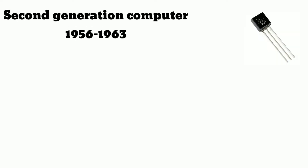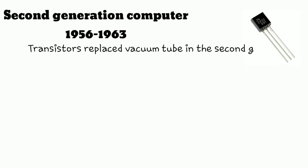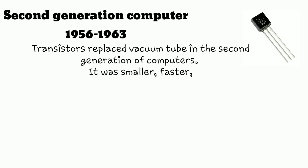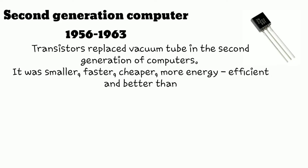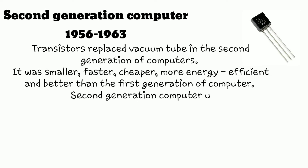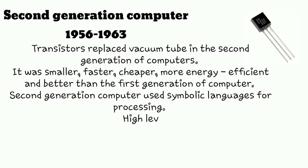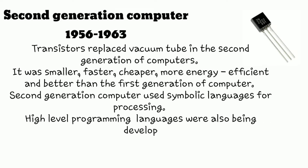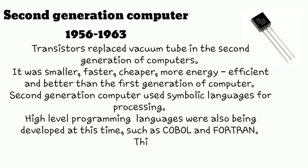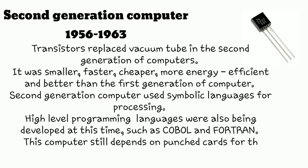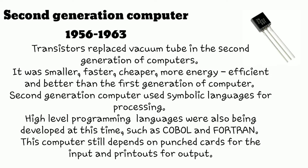Now second generation computers, 1956 to 1963. The transistor replaced the vacuum tube in second generation computers. They were smaller, faster, cheaper, more energy efficient, and better than first generation computers. Second generation computers used symbolic language for processing, and high-level programming languages were also being developed at this time. These computers still depended on punch cards for input and printouts for output.